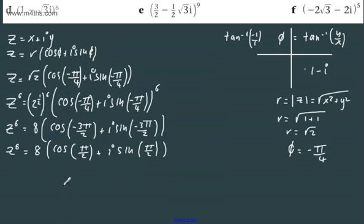What we're going to do though is evaluate this. z to the 6 is going to be 8. The cosine of pi by 2 is 0. The sine of pi by 2 is going to be 1. So we simply end up with z to the 6 equals 8i.